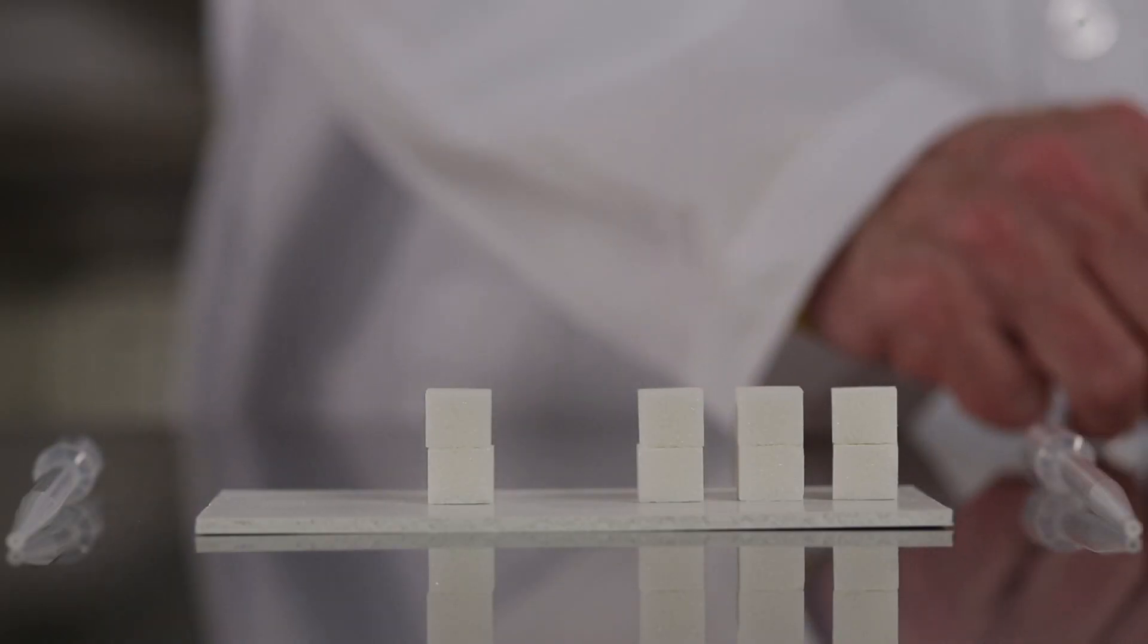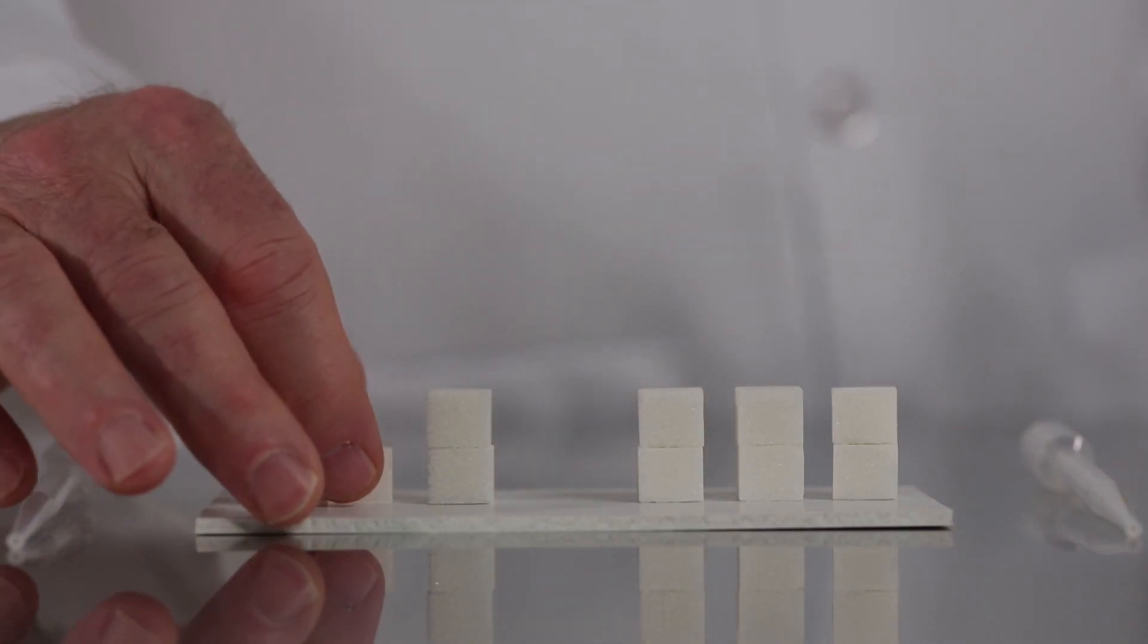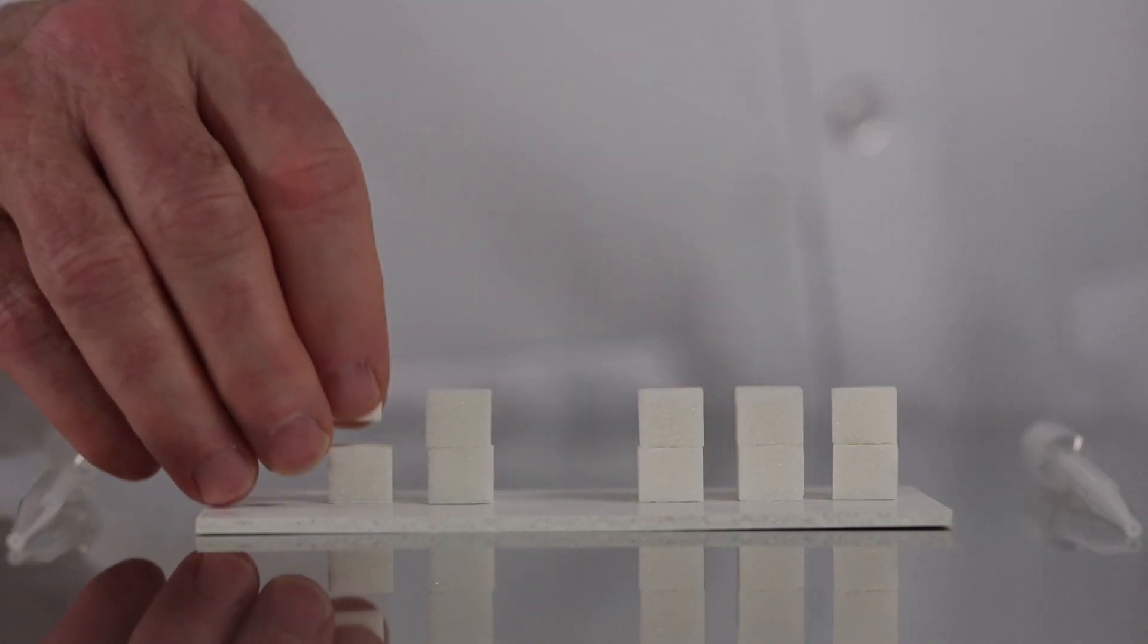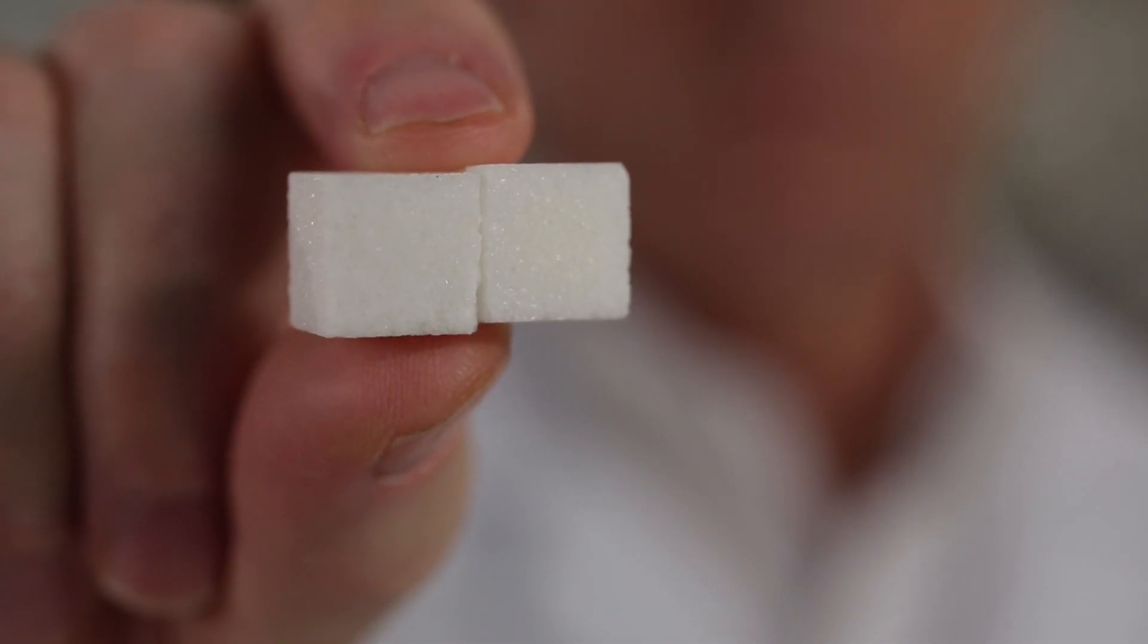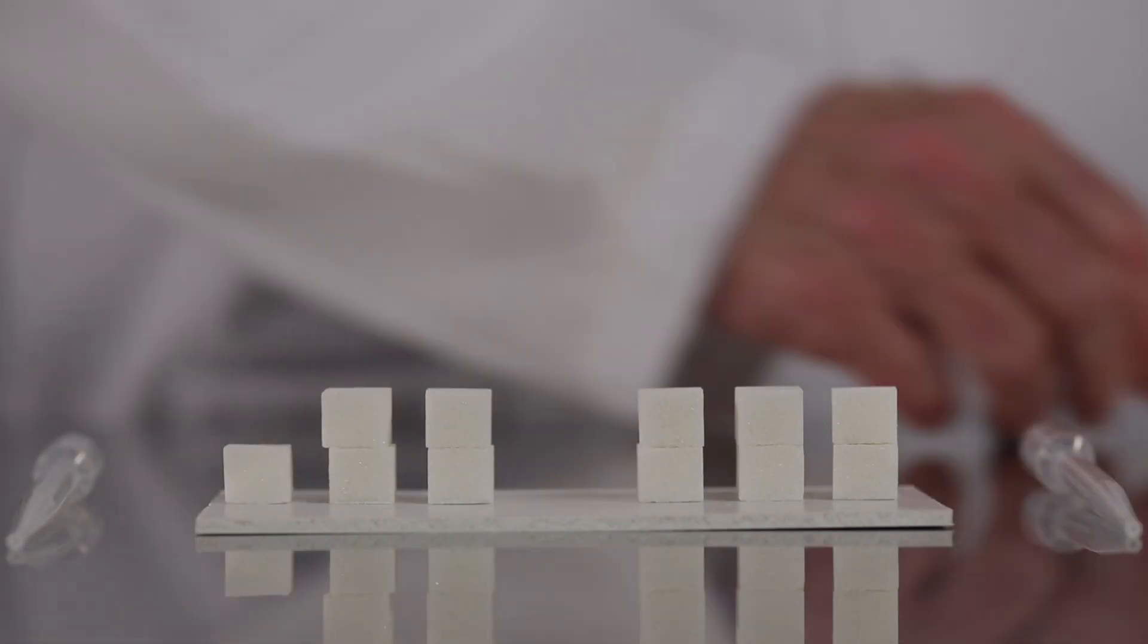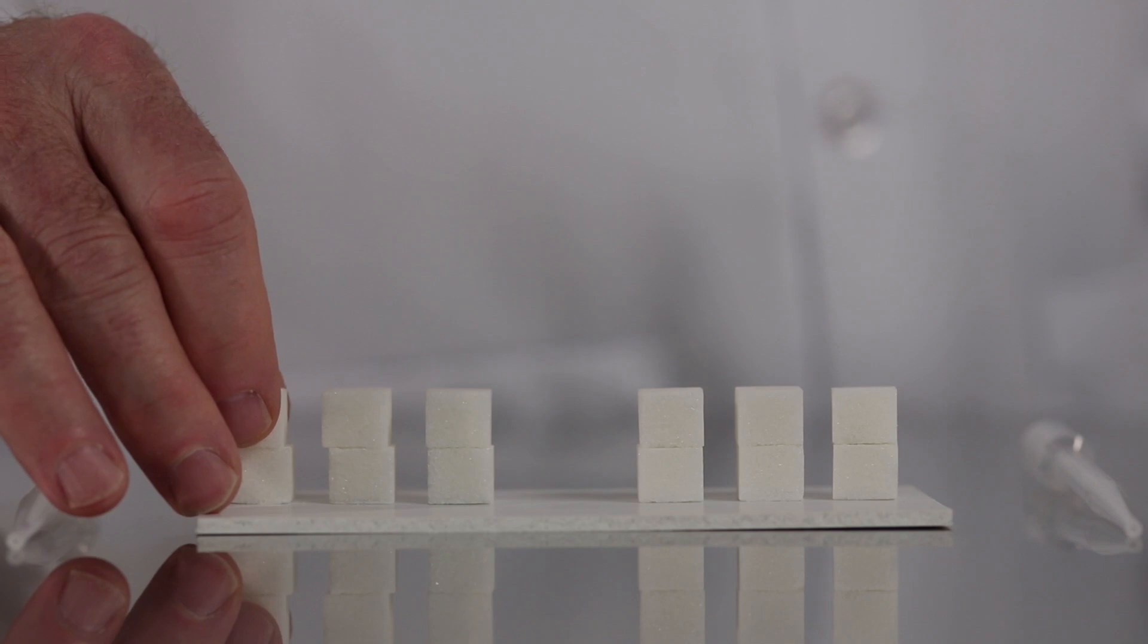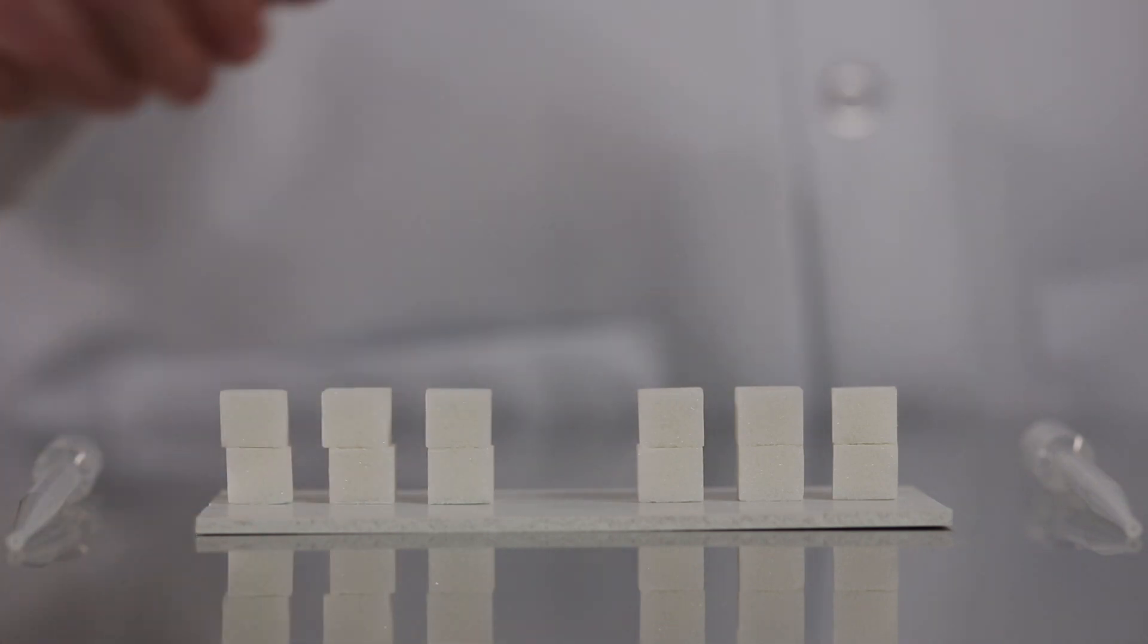Our first step is to create two groups of sugar cubes. Each group will consist of three columns, two cubes high. Note that each cube has one polished side. Place the polished side of the top cube at the top and the polished side of the bottom cube at the bottom to eliminate unfair advantage between the two groups.